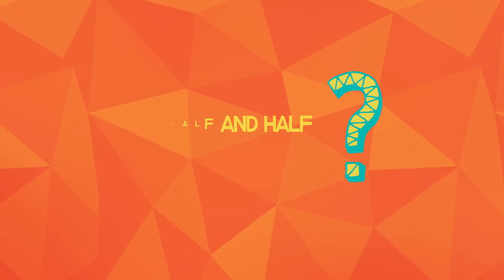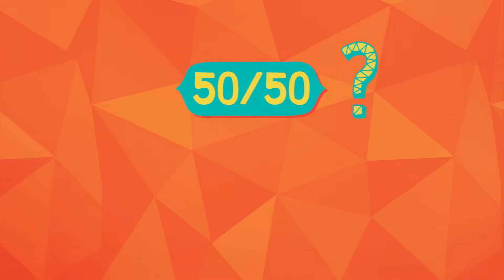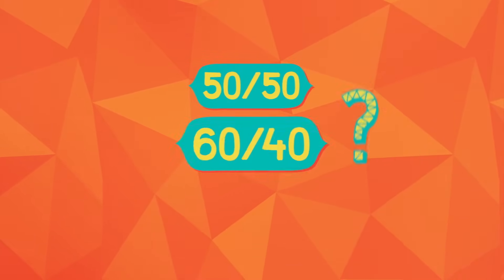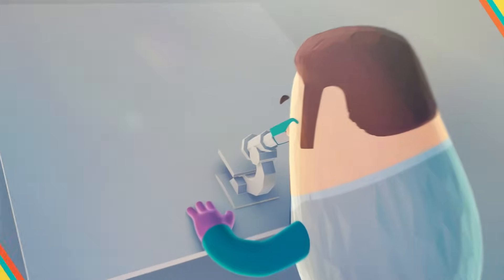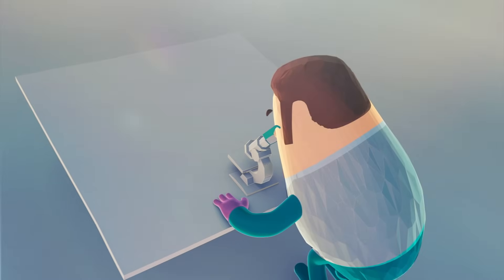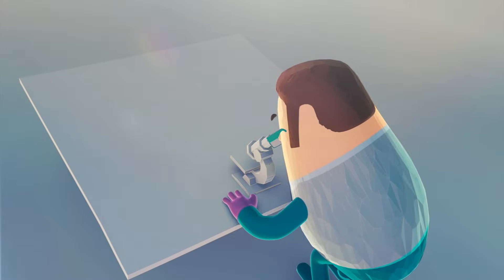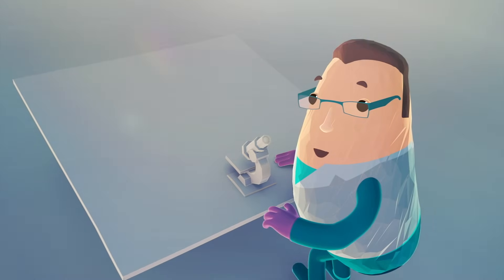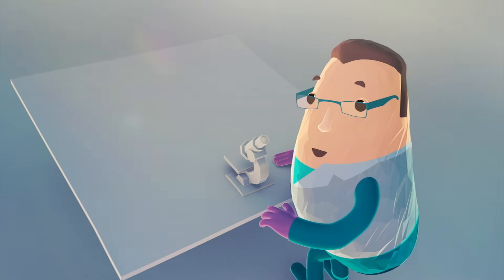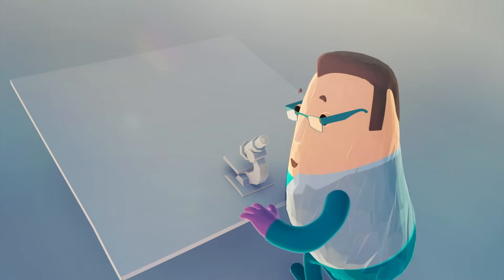Now, how many people do you think there are in each state? Half and half, right? No. Well, maybe. It depends. It could be 50-50, but it could be 60-40 or anything. We chemists have to get our little gloved hands dirty — well, we're in a lab, so not really dirty — to figure out what the actual distribution of molecules is.